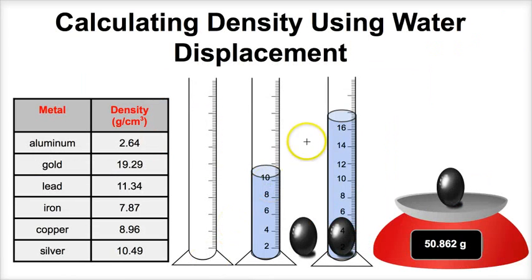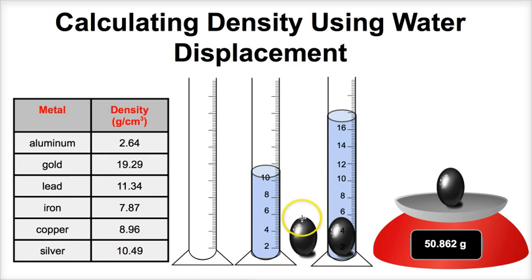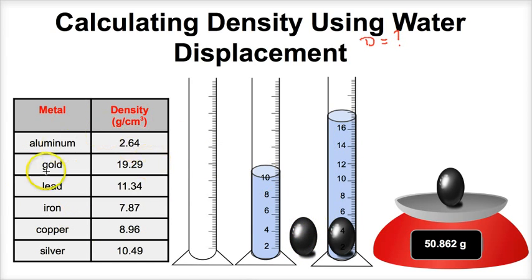We're going to learn how to calculate the density of an object using water displacement. Let's suppose I have this little ball here made of some sort of metal, and we want to figure out what the metal is. We'll have to figure out the density of this metal ball and then compare it to a chart of densities to determine what metal it's going to be.